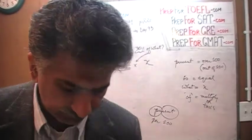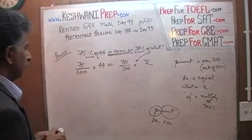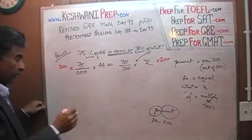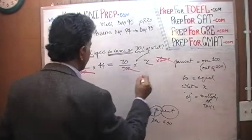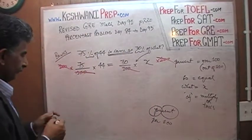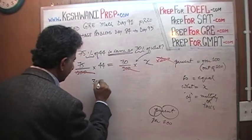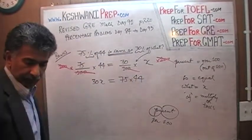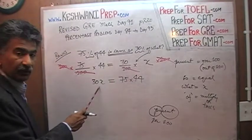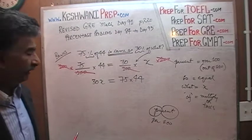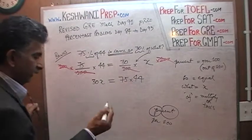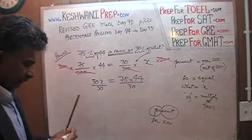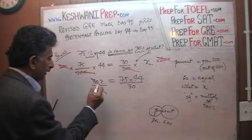Once we have the equation, the rest is very straightforward. We're just going to solve for X. Multiply both sides of the equation by 100 — we can knock out the 100s on both sides. We are left with 30X = 75 times 44. I prefer to put the unknown on the left-hand side. So let's bring this to the left and divide both sides by 30 to get rid of this coefficient, and we are left with just one X.